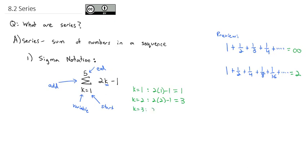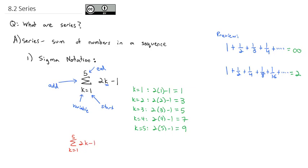Continuing, k equals 3 gives 2 times 3 minus 1, which is 5. k equals 4 gives 2 times 4 minus 1, which is 7. And k equals 5 gives 2 times 5 minus 1, which is 9. We stop there because k equals 5 is the top number of the sigma — that's our ending value. So the sum as k goes from 1 to 5 of 2k minus 1 means we add the sequence: 1 plus 3 plus 5 plus 7 plus 9 equals 25. That's what sigma notation has us do — add up the elements of a sequence using the formula.